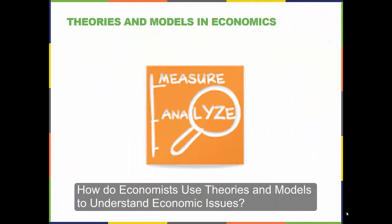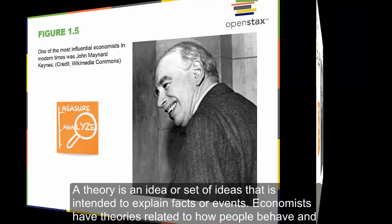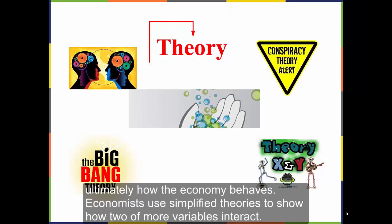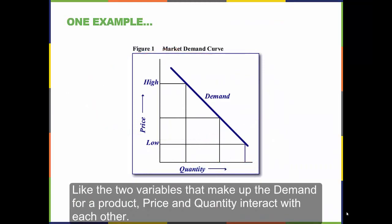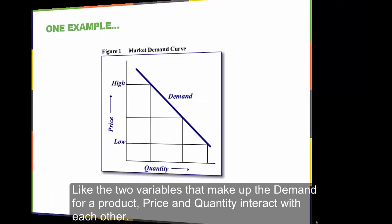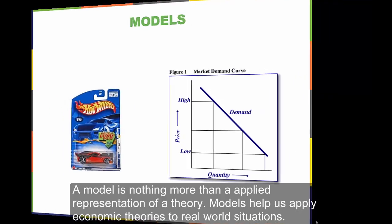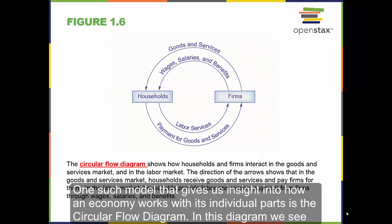How do economists use theories and models to understand economic issues? Economists analyze issues and problems using theories and models. A theory is an idea, or a set of ideas, that is intended to explain facts or events. Economists have theories related to how people behave and ultimately how the economy behaves. Economists use simplified theories to show how two or more variables interact — like the two variables that make up the demand for a product: price and quantity interact with each other. A model is nothing more than an applied representation of a theory, and models help us apply economic theories to real-world situations.